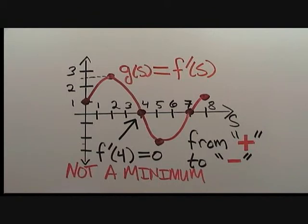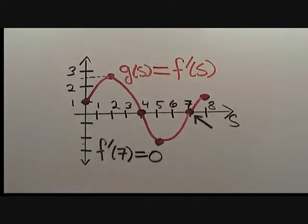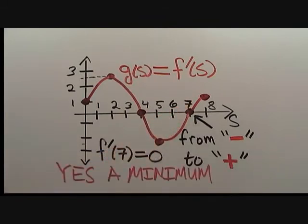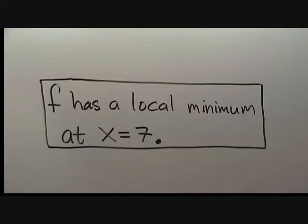Now we look at s equals 7 more closely. We see that f' is in fact equal to 0, and f' changes sign from negative values to positive values. Therefore, yes, f does have a local minimum at 7. Our answer is f has a local minimum at x equals 7.